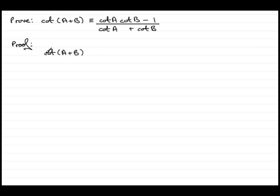Now, what is cotangent, or cot for short? Well, it's 1 over the tan of A plus B. But I don't really want to write this as 1 over the tan of A plus B.